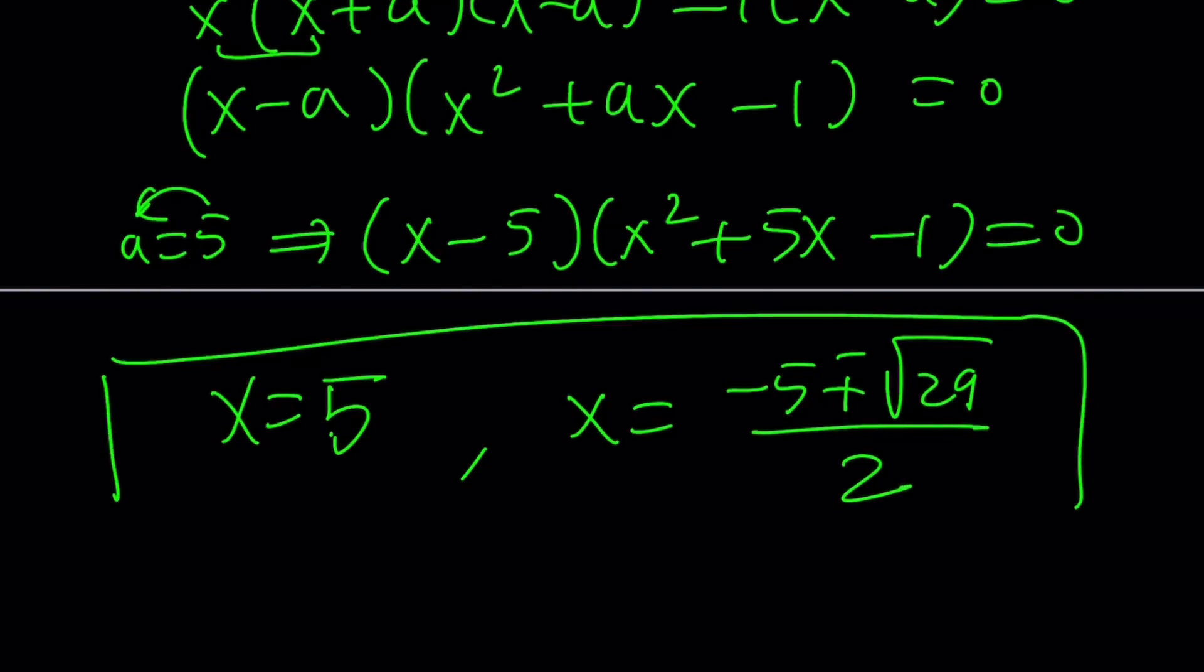And x equals negative b plus minus the square root of 29 over 2. There are three real solutions to this cubic equation, which indicates or which means that when we take a look at the graph of it, it's going to have three x-intercepts. So let's go ahead and take a look at the graph now and see what that looks like.